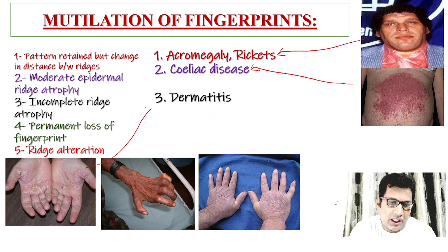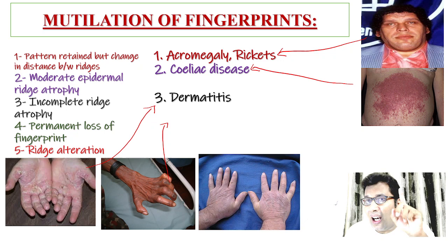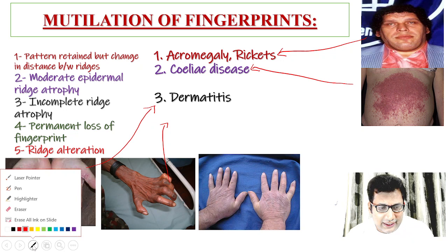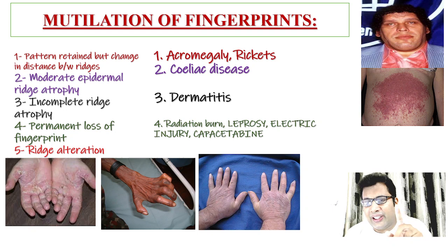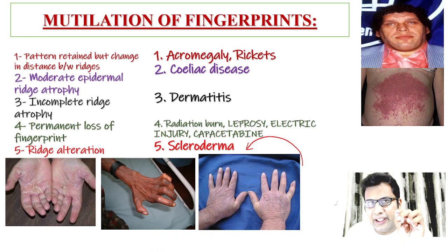Fourth, permanent loss of fingerprint — seen in leprosy, electrical injury, radiation injury, and the anti-cancer drug capecitabine. These are the permanent causes. Fifth, ridge alteration that takes place in scleroderma. This was recently asked in the AIIMS exam — please go through this carefully.